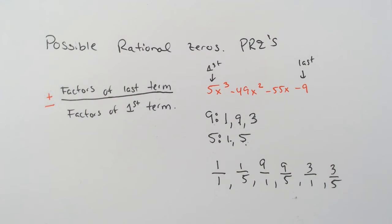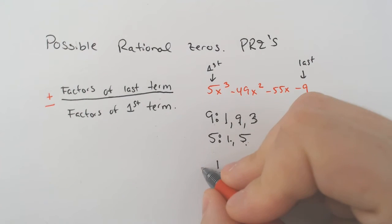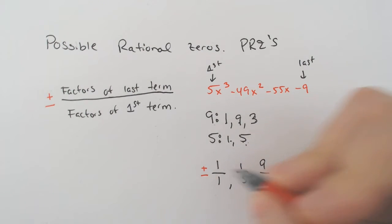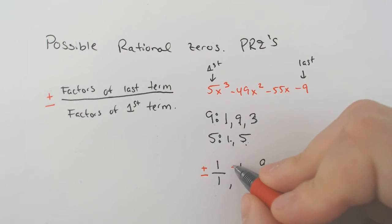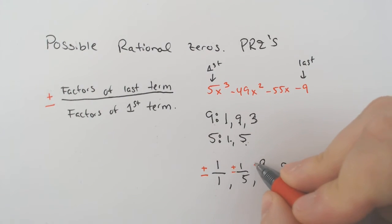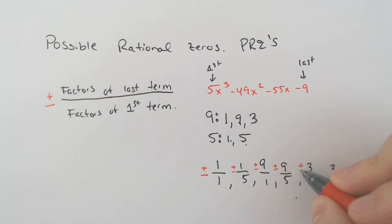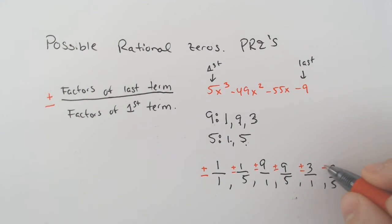Essentially, these are the possible rational zeros, and each one can be either positive or negative — all six of them.